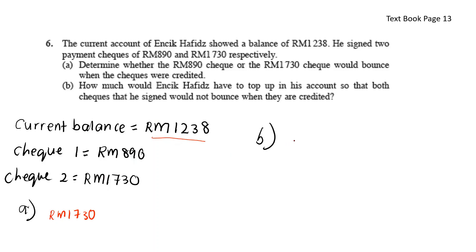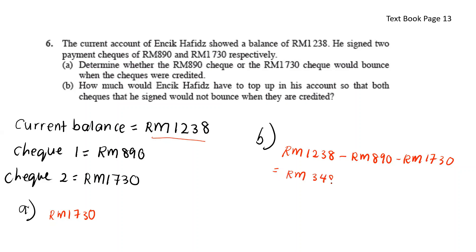For part B — how much does Encik Hafidz need to top up so both cheques don't bounce? Current balance RM1,238 minus RM890 gives RM348. Then RM348 minus RM1,730 gives negative RM1,382. So Encik Hafidz would have to top up RM1,382.